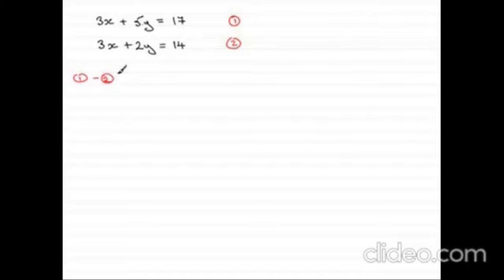Let's subtract equation 1 takes away equation 2. So here, 3x minus 3x, which is 0. You don't have to bother writing that 0. It's not necessary.